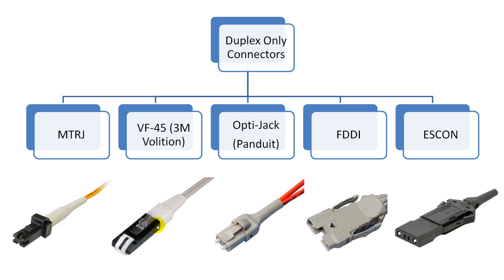The next duplex-only connector is called VF45, also called the 3M Volition connector. It is a sleek duplex connector with no ferrules at all — it aligns fibers in a V-groove, like in a mechanical fiber splice. OptiJack is a duplex connector from Panduit with two 2.5 mm ferrules, just like regular SC connectors. The size of OptiJack is that of an RJ45 connector.